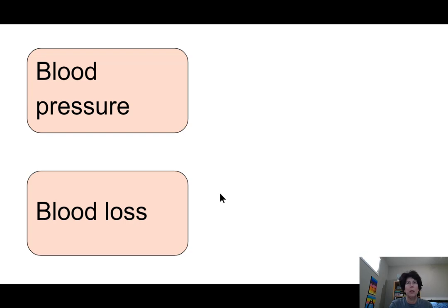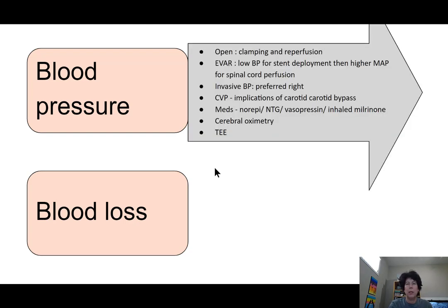What are the things we really have to think about? First up is blood pressure. Blood pressure is significantly impacted in our open cases with clamping, and how significant that impact is really depends on how high the clamp goes. During endovascular surgery, we still need very good blood pressure control — we need a low blood pressure for stent deployment, and then immediately afterwards a higher blood pressure to maintain spinal cord perfusion once the aneurysm or dissection has been fixed. There are techniques used for significantly dropping cardiac output during surgery — at our site, that would be either adenosine arrest or occlusion of left atrial inflow.